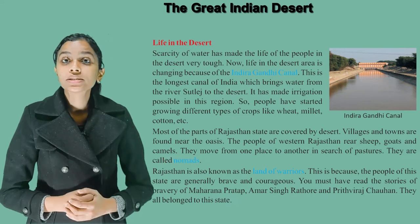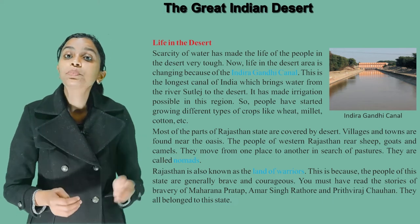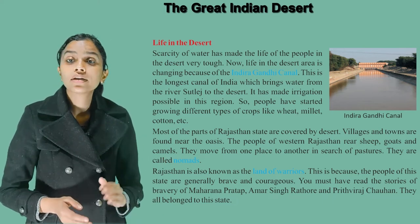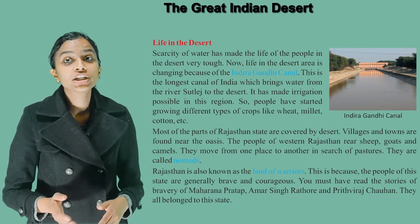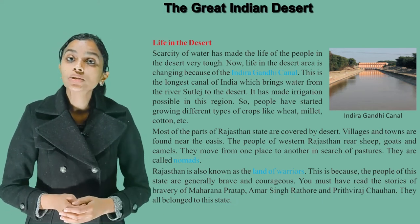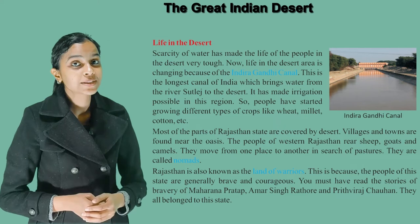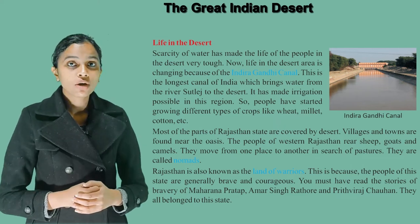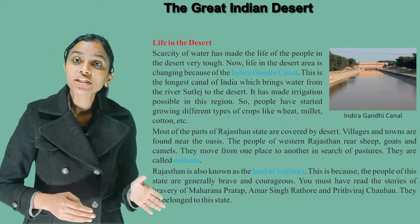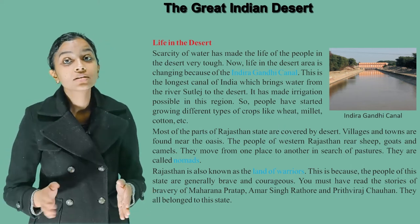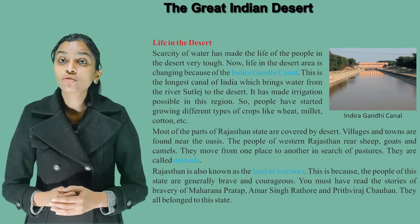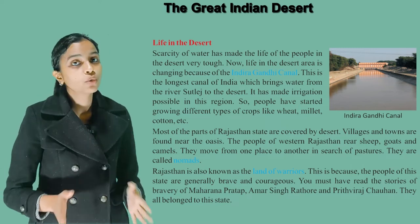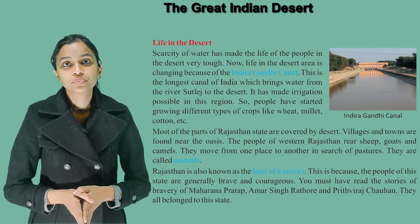Most parts of Rajasthan state are covered by desert. Villages and towns are found near the oasis. The people of Western Rajasthan rear sheep, goats, and camels. They move from one place to another in search of pastures — they are called nomads.